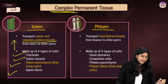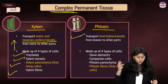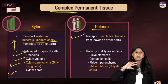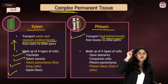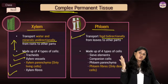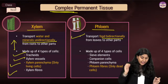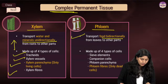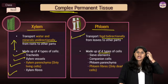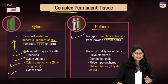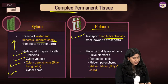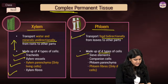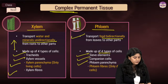The movement in xylem happens in only one direction — it is unidirectional. Phloem has bidirectional flow of food, from shoot to root and root to shoot. Phloem is made up of four types of cells: sieve elements, companion cells, phloem parenchyma, and phloem fibre.